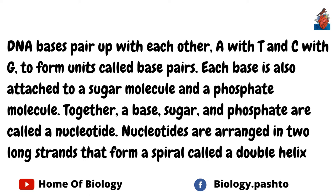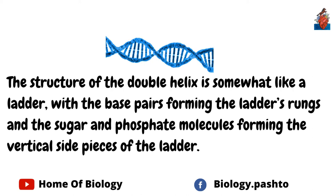Together, a base, a sugar, and a phosphate are called a nucleotide. Nucleotides are arranged in two long strands that form a spiral called a double helix. The structure of the double helix is somewhat like a ladder, with the base pairs forming the rungs and the sugar and phosphate molecules forming the vertical sides of the ladder.